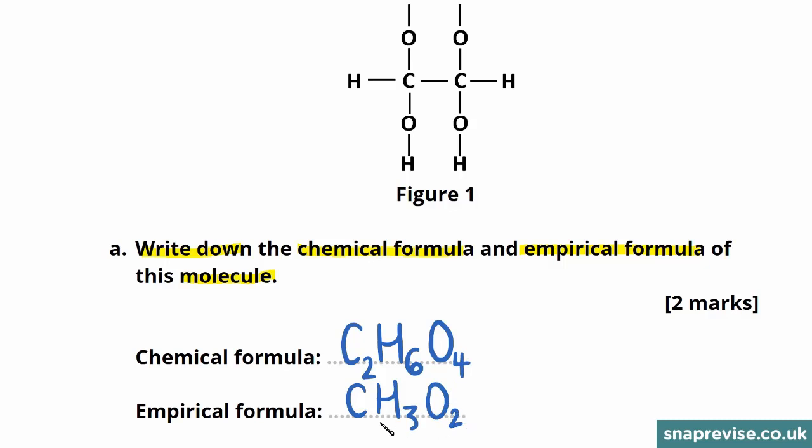The simplest whole number ratio is 1 to 3 to 2, which is equivalent to 2 to 6 to 4. And we've therefore identified our empirical formula for this molecule. You get one mark for correctly getting the chemical formula and one mark for the correct empirical formula.